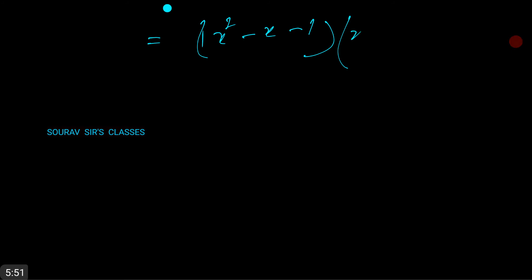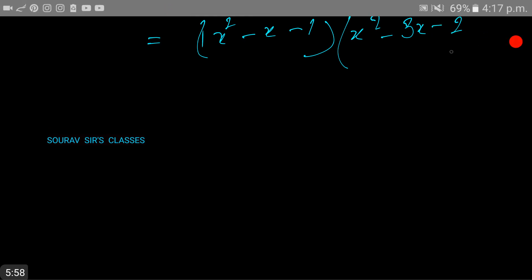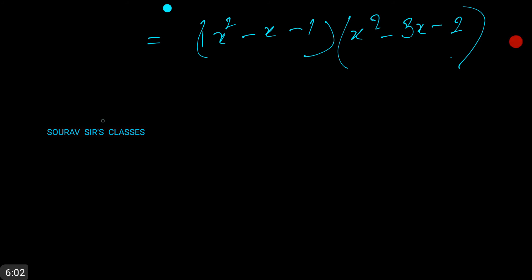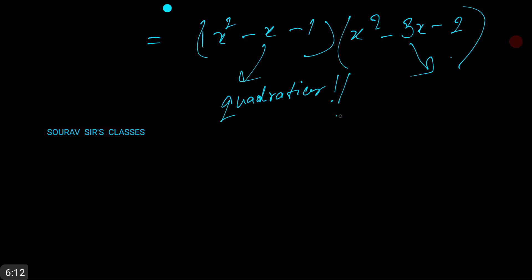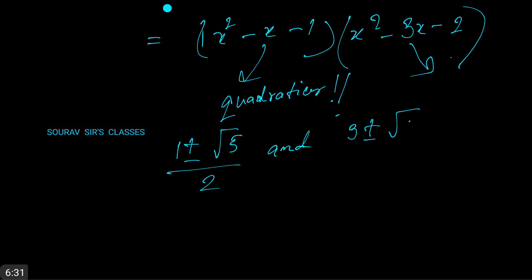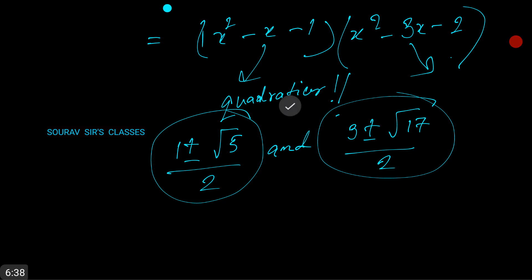This gives us (x² - x - 1)(x² - 3x - 2). These are now two quadratics. Solving each, the roots are (1 ± √5)/2 and (3 ± √17)/2. These are the roots of the given equation.